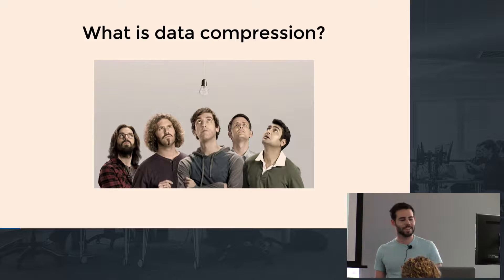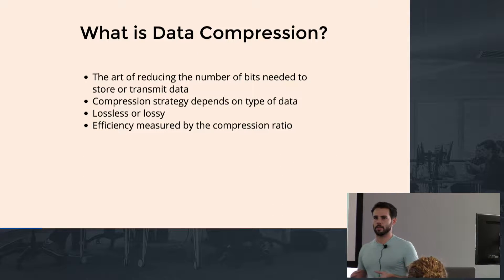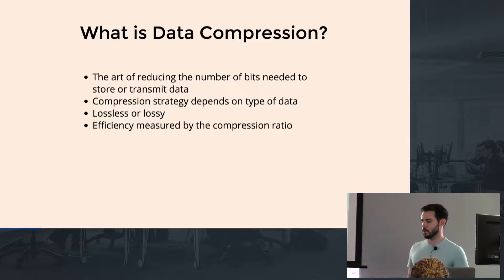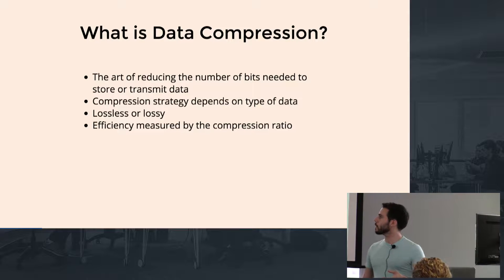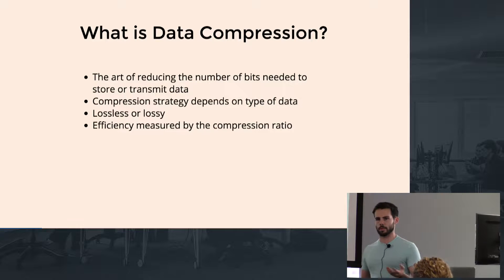What is it? Like I said I think we all kind of have an idea of what it is, but basically it's the art of reducing the amount of bits you need to store and transmit data. The reason I say art is because there's really no optimal approach — it always kind of depends on the type of data that you're trying to compress. Its efficiency is generally measured by something called the compression ratio, which is just the ratio of uncompressed file size to compressed file size. So if you can reduce file size by half, it has a compression ratio of two.